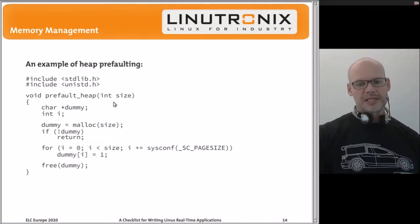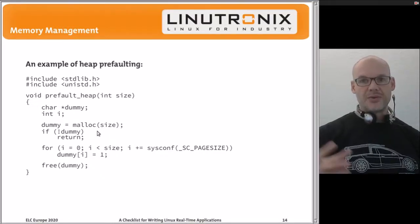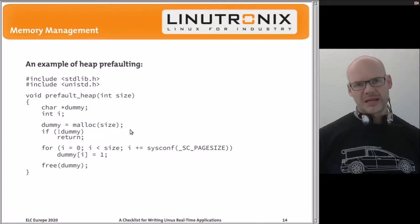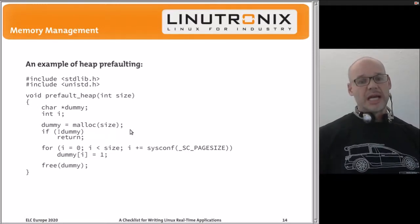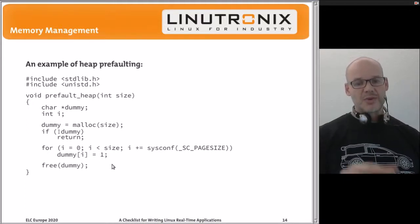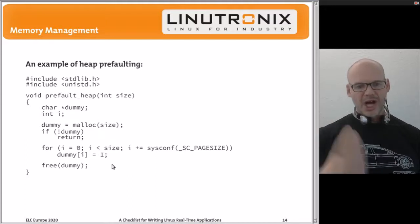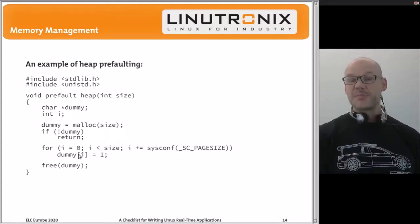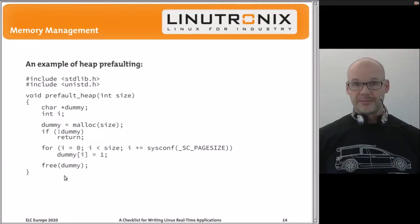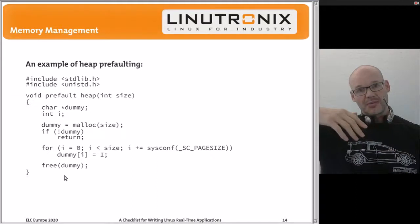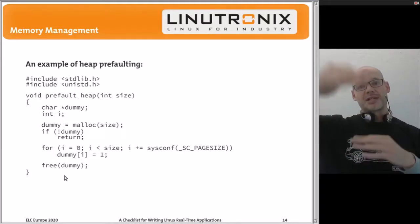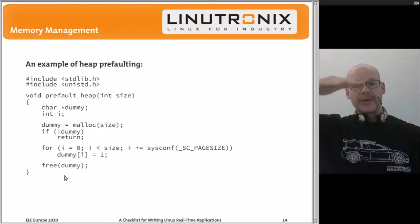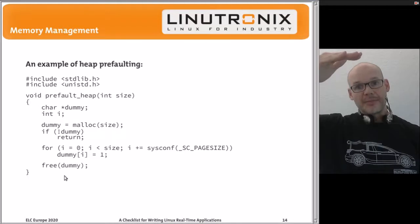For heap pre-faulting, write a function that allocates a large chunk of memory — sized to your worst-case requirement, perhaps 10 or 100 megabytes — then touches one byte per page in a loop to trigger all the page faults up front. This loop is expensive, but you only do it once at startup. Then free the memory; since trimming is disabled and mlockall is active, that pre-faulted heap area remains available and resident in RAM.